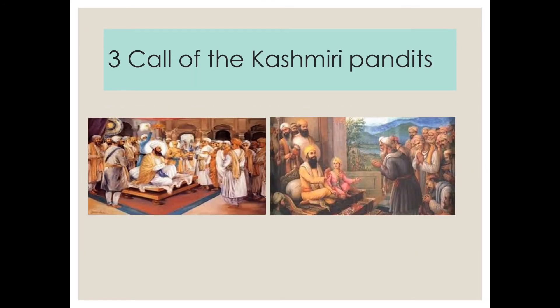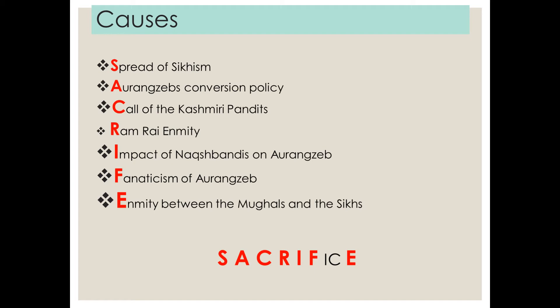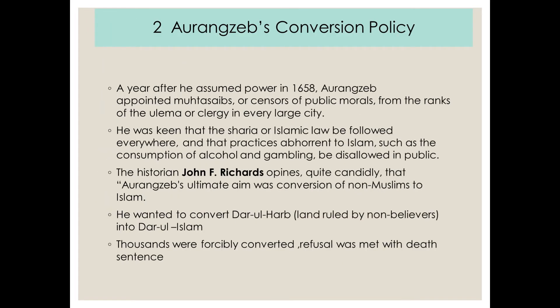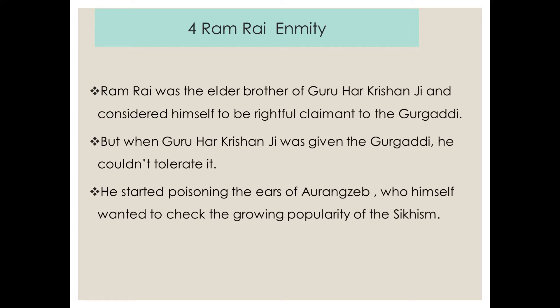So we have done our three reasons. Let's go back to the word SACRIFICE: S — spread of Sikhism; A — Aurangzeb's conversion policy; C — call of the Kashmiri Pandits. Now let's do the rest. R stands for Ram Rai's enmity. If you remember, Ram Rai was the elder son of Guru Har Krishan Ji, and he considered himself the right person to be on the Gurgaddi. When Guru Har Krishan Ji was given the Gurgaddi, Ram Rai could not tolerate it. He started poisoning the ears of Aurangzeb, and this ultimately led to the martyrdom of Guru Tegh Bahadur Ji.